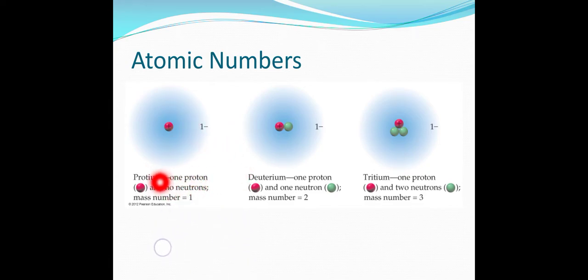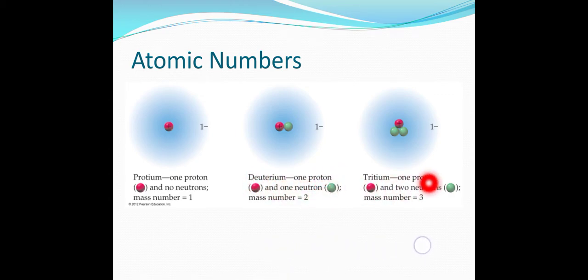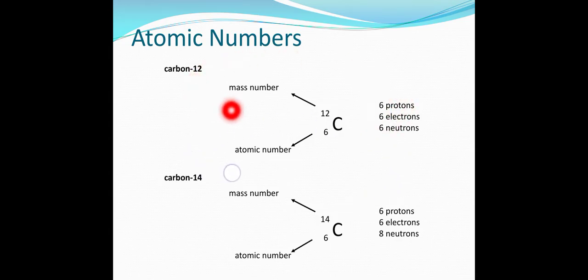Protium has one proton and no neutrons, deuterium has one proton and one neutron, and tritium has one proton and two neutrons — these are the three isotopes of hydrogen. For carbon, carbon-12 and carbon-14 are isotopes with the same atomic number but different mass numbers: carbon-12 has mass number 12 and carbon-14 has mass number 14.